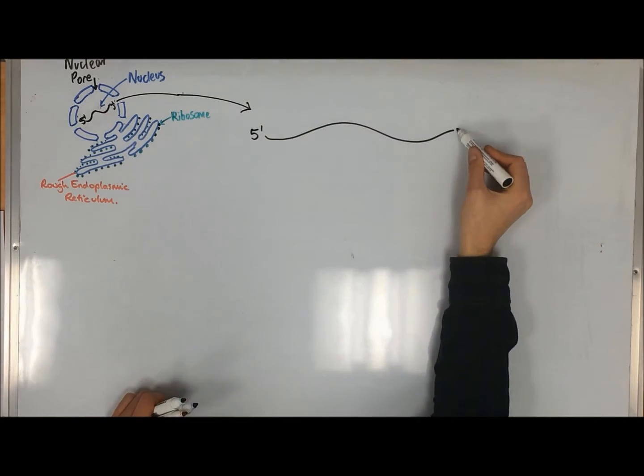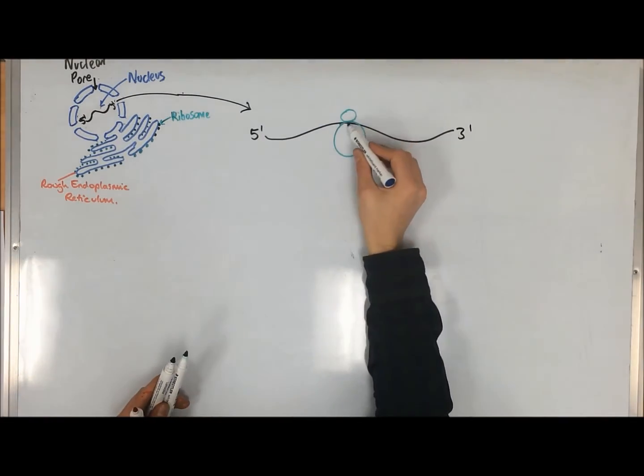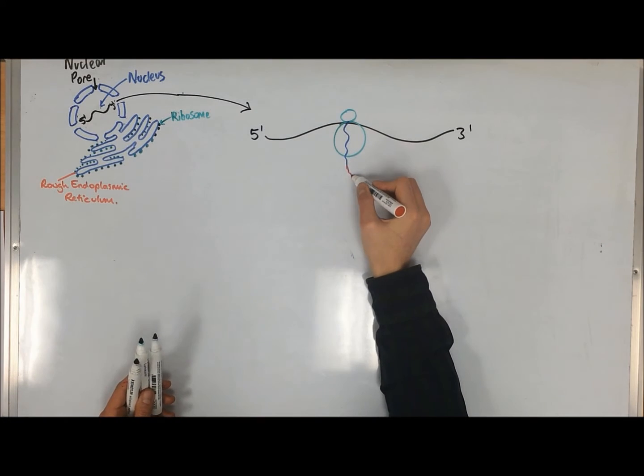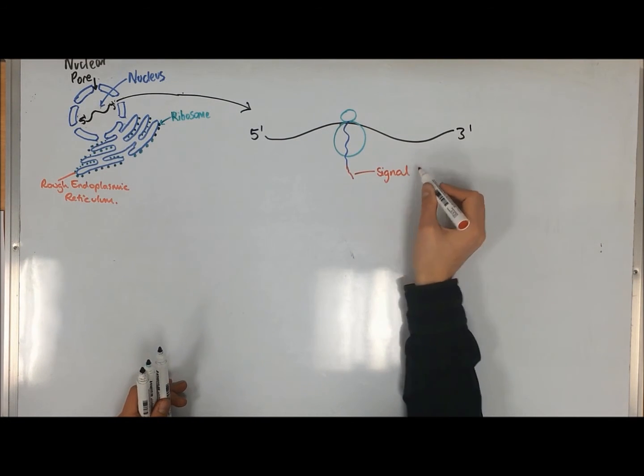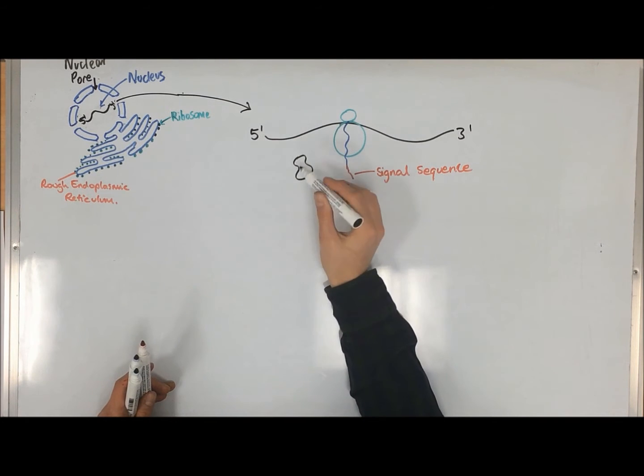This is a clear difference to the smooth ER. As described by the signal hypothesis, the mRNA becomes bound to the free ribosomal subunits and is directed to the membrane of the RER by a signal sequence consisting of a positively charged amino acid chain, followed by a 5-15 hydrophobic amino acid sequence.